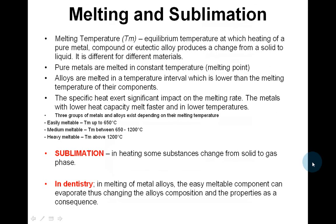Melting and sublimation. Melting temperature is the equilibrium temperature at which heating of a pure metal, compound, or eutectic alloy produces a change from solid to liquid; it differs for different metals. Pure metals melt at a constant temperature, while alloys melt over temperature intervals lower than the melting temperatures of their components. The specific heat exerts significant impact on the melting rate — metals with lower heat capacity melt faster and at lower temperatures. In sublimation, some substances change from solid to gas phase during heating. In dentistry, when melting metal alloys, the easily meltable component can evaporate, changing the alloy's composition and properties.